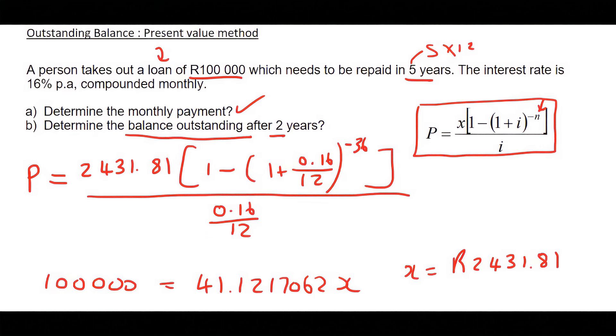The present value method for outstanding balance is quite an easy one. But some students do prefer the future value method. All right, and what this tells us is that the present value is going to be 69,169.94. And that would be in Rand.